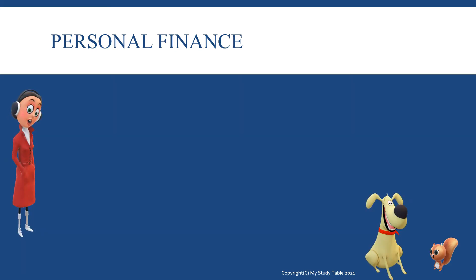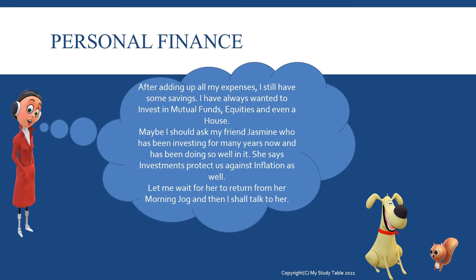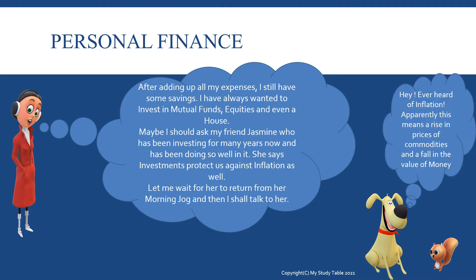After adding up all the expenses, Anna still has some savings. She is aware of the different investment avenues available in the market and wants to invest in mutual funds, equities and even a house, but she does not have too much clarity on it. She is probably unaware of the ways in which she needs to be investing, so she thinks about asking her friend Jasmine, who has been investing for many years and doing pretty well. She knows Jasmine understands how investments protect against inflation.